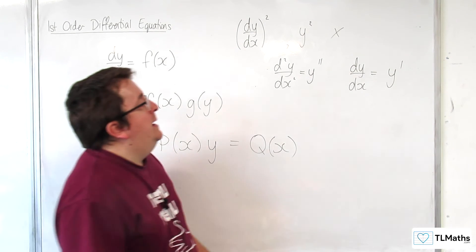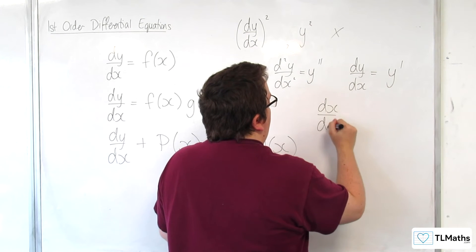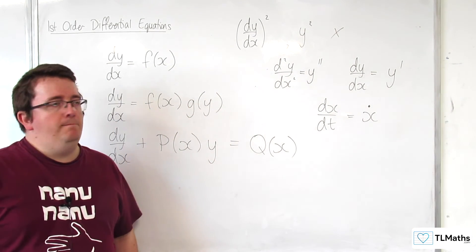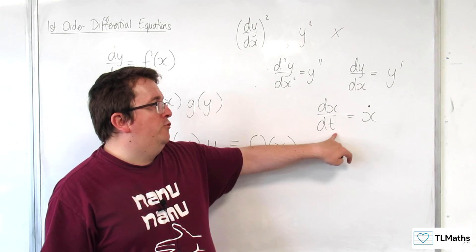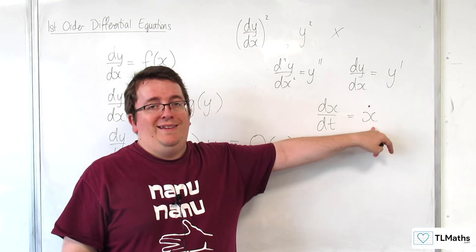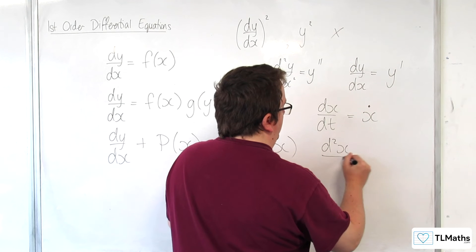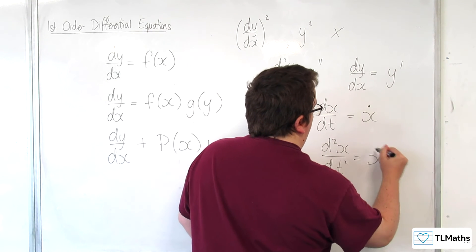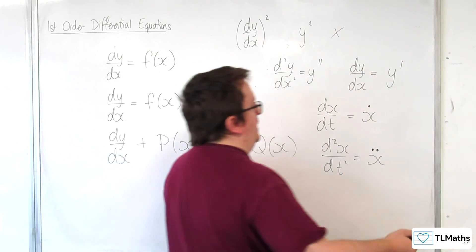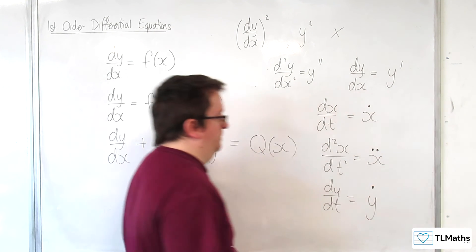You may also see things like dx by dt abbreviated to x with a dot at the top. So when you differentiate with respect to t, usually in context time, this is often abbreviated as x dot. So, if you wanted d2x by dt squared, this would be x double dot. And you can have dy by dt if you like, so y dot.